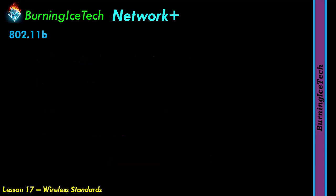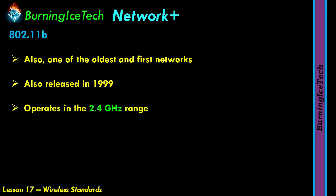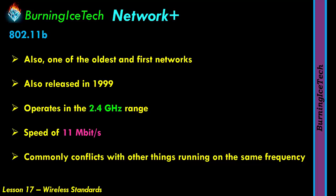Next up, we've got the 802.11b standard. This is also one of the oldest and probably one of the first IEEE standards that came out, also released in 1999. Unlike the 802.11a which operates at 5 GHz, this 802.11b standard operates at a 2.4 GHz frequency range. It has a much lower speed of only 11 Mbps. Since this is a very common frequency, it tends to conflict with a lot more things out there. The 2.4 GHz range is one of the most common frequencies, which means you're going to experience a great deal of possible conflict.